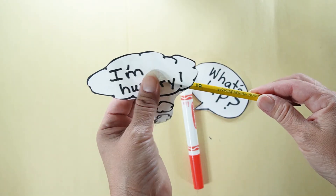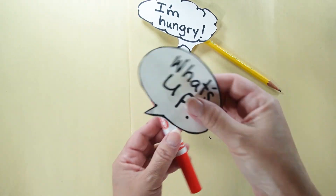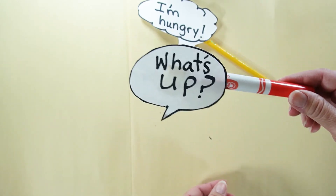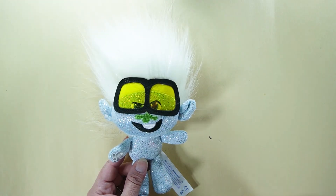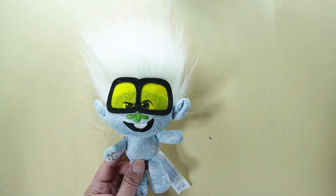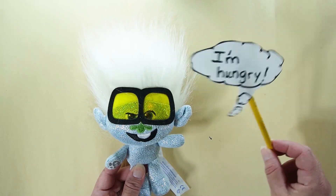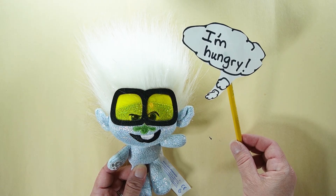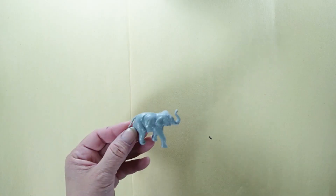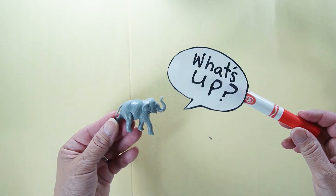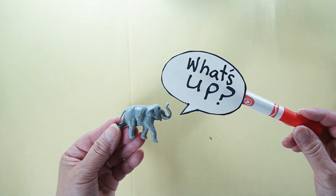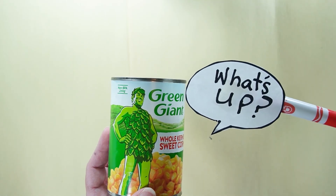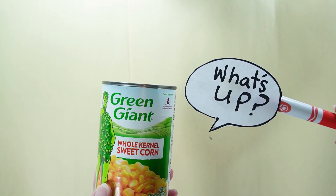With a piece of tape on the back, I'm going to connect it to a pencil — I only have a marker so that'll have to do. You're going to bring something to life: it can be a stuffy, like this one that says 'I'm hungry,' or my plastic elephant saying 'what's up,' or even something silly like a can of corn saying 'what's up.' Funny, right?